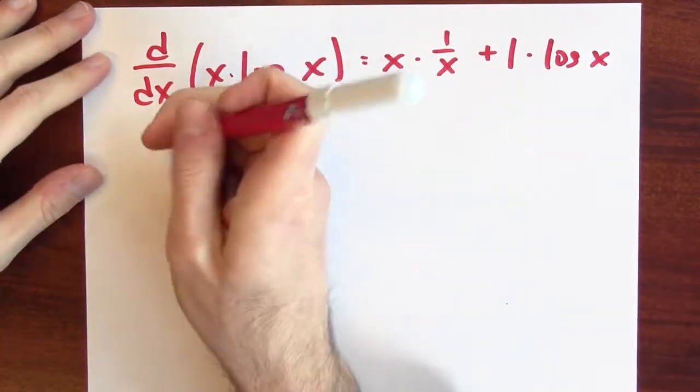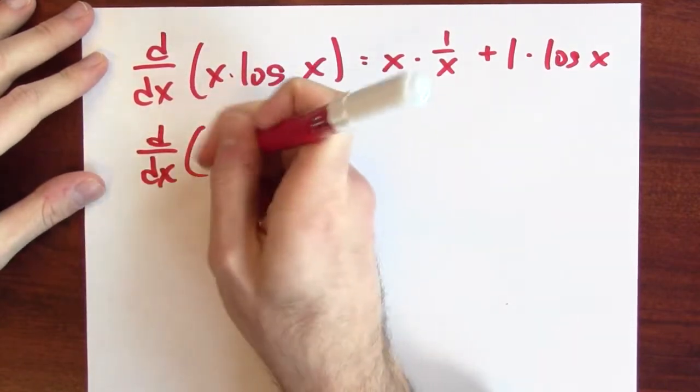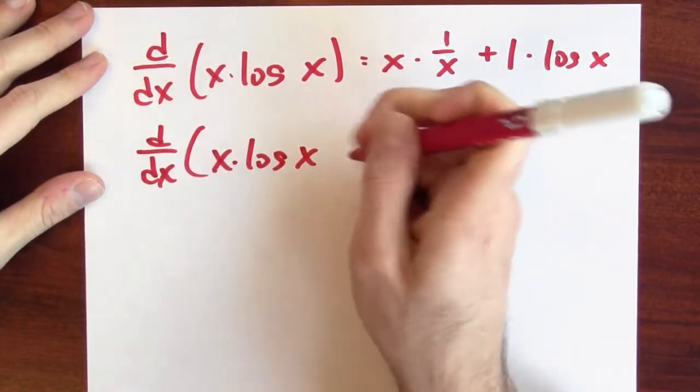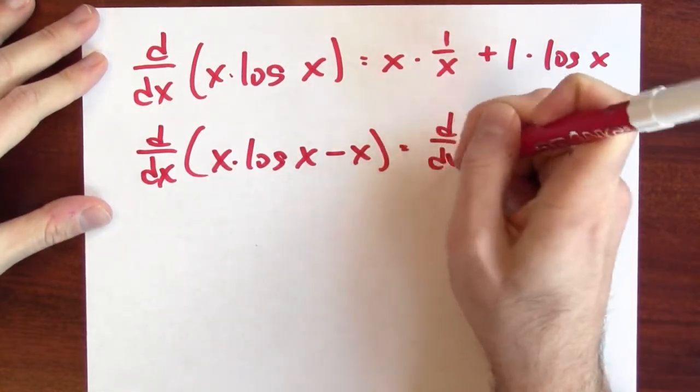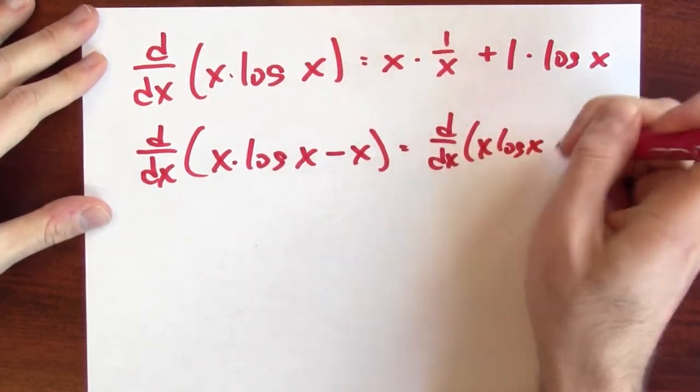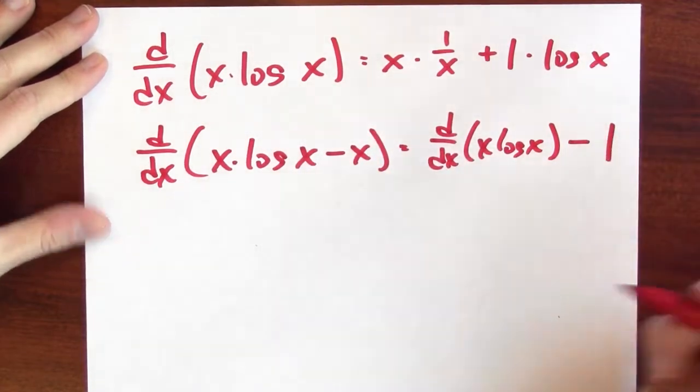Now you can tweak this a little bit. What's the derivative of x log x minus x? Well, that's the derivative of x log x minus the derivative of x, which is 1.